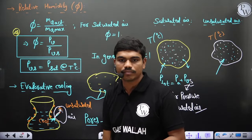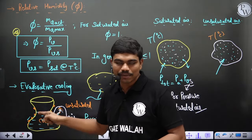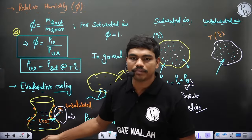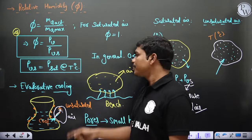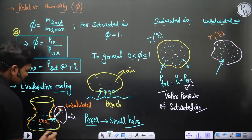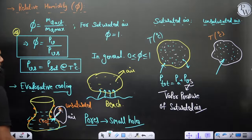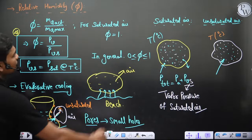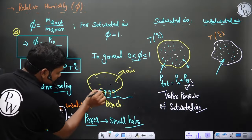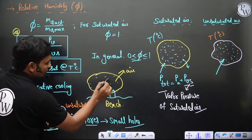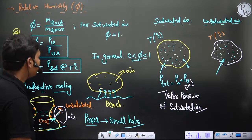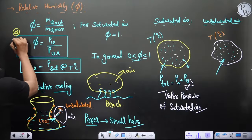This evaporative cooling phenomenon is very important in deciding something called wet bulb temperature, which we'll see later. This is also related to phi — that's why near beaches you feel cool breeze, because evaporation from the sea surface is happening continuously.